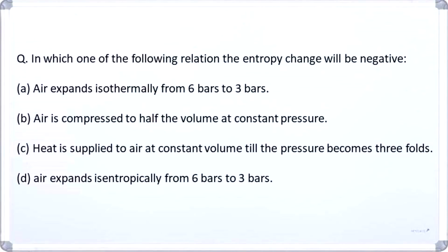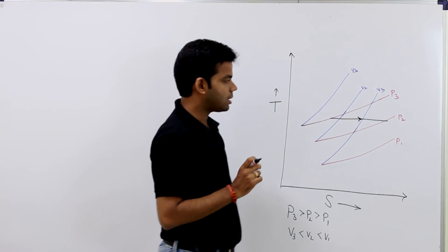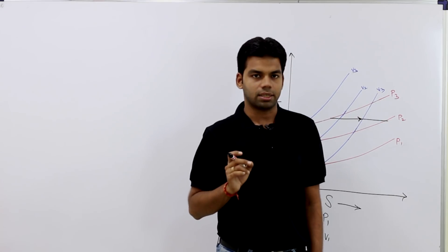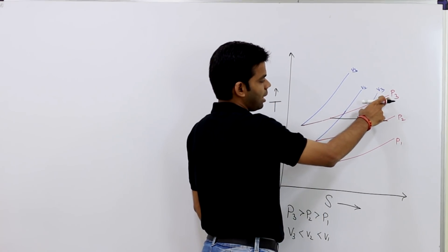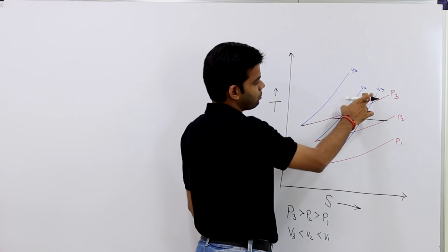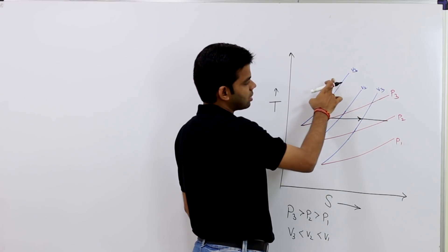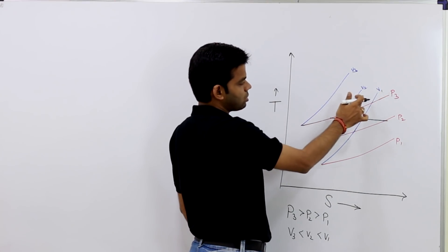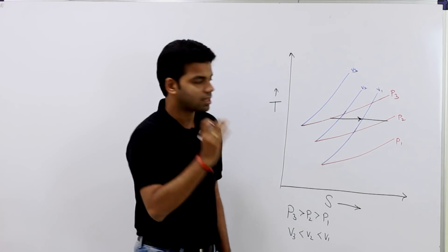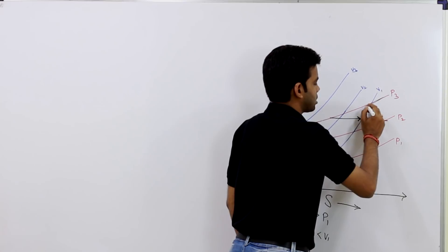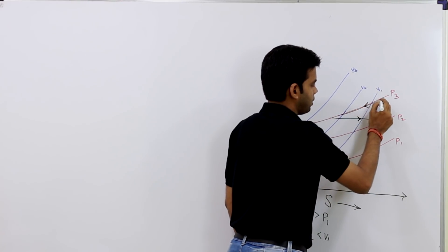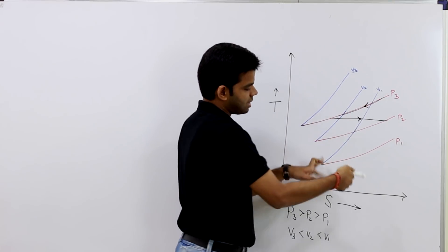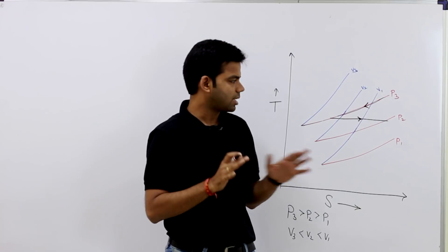The second option says air is compressed to half the volume at constant pressure. Pressure remains constant and volume is decreasing. Since volume decreases moving upward along a constant pressure curve, the process moves in the direction of decreasing entropy. So obviously entropy decreases in this case. The answer is option B.